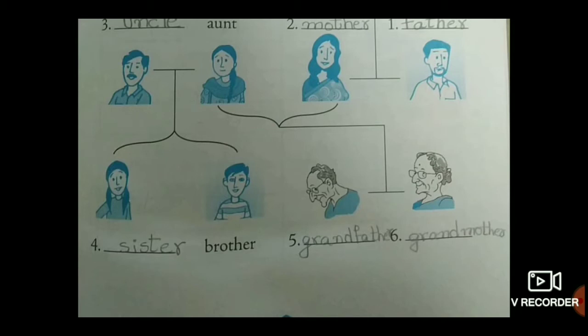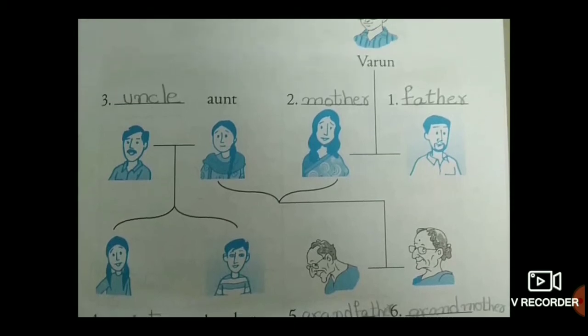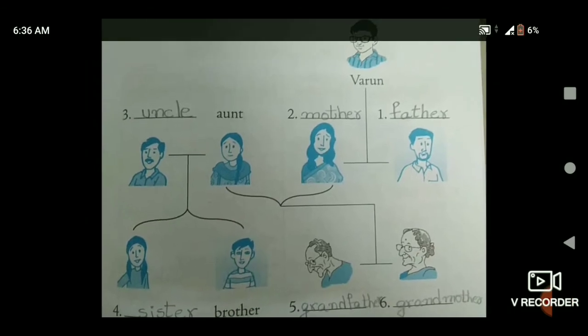Those are uncle and aunt, children. Next one, grandfather — G-R-A-N-D F-A-T-H-E-R, grandfather. Sixth one, grandmother — G-R-A-N-D M-O-T-H-E-R, grandmother. Those are mother and aunt, parents, grandfather and grandmother. So this is the family tree of Varun.